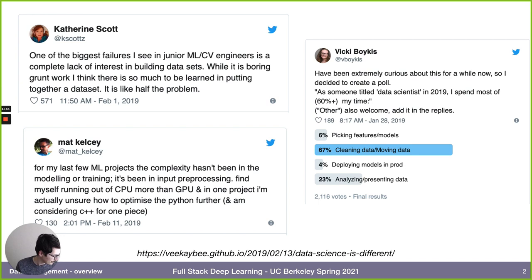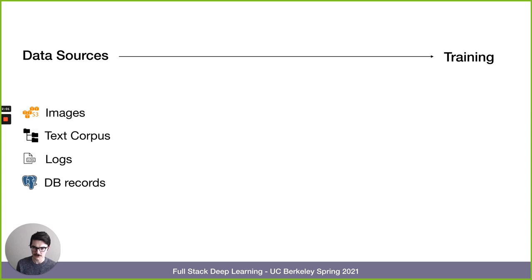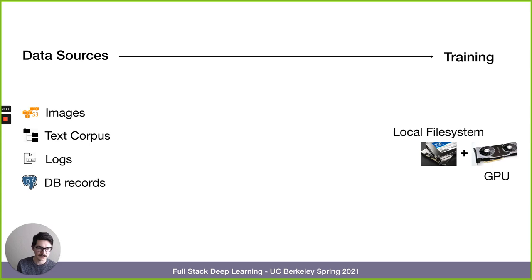When we think about what data management for deep learning specifically entails, there might be a lot of different sources of data. You might have images on S3, a bunch of text files somewhere on the file system, log files, maybe even spread across machines, records in a database. But at some point you've got to get all that stuff over to a local file system that's next to a GPU, or many GPUs.